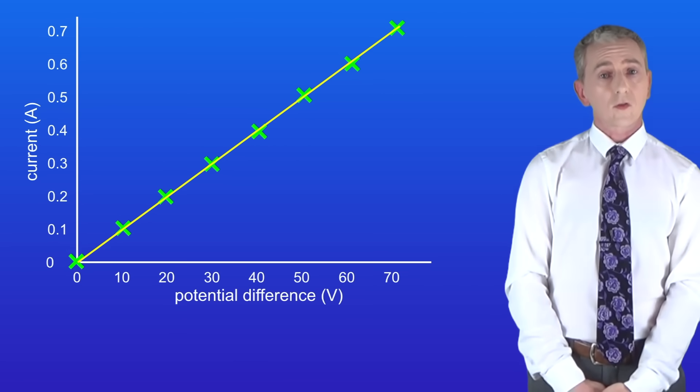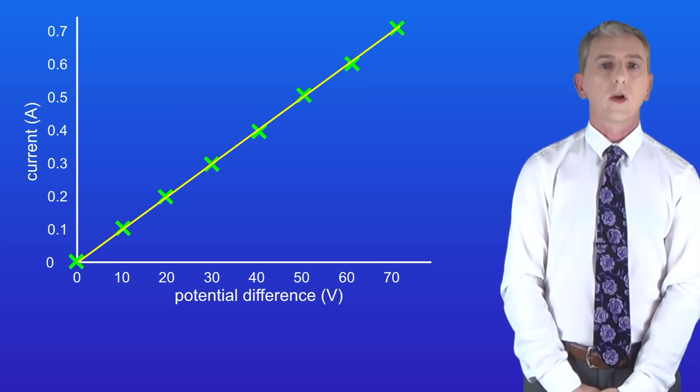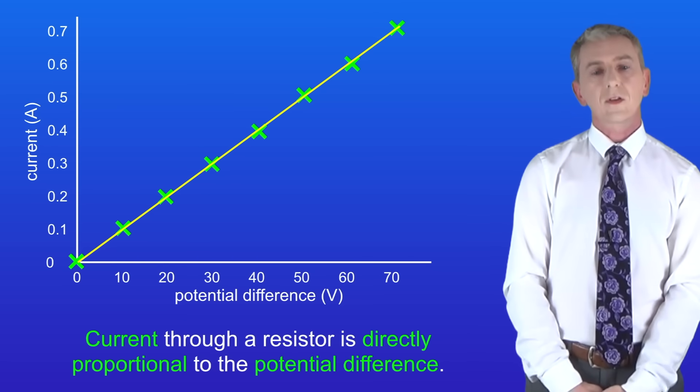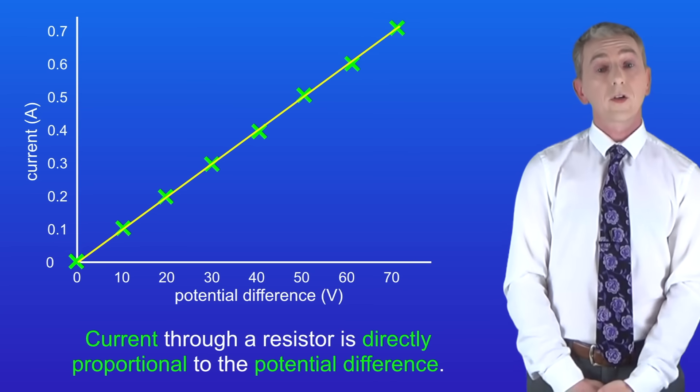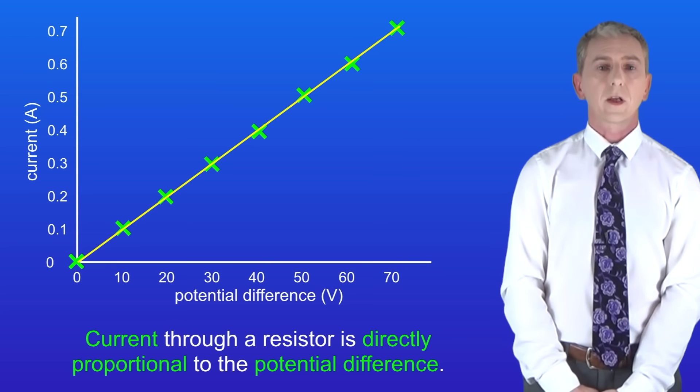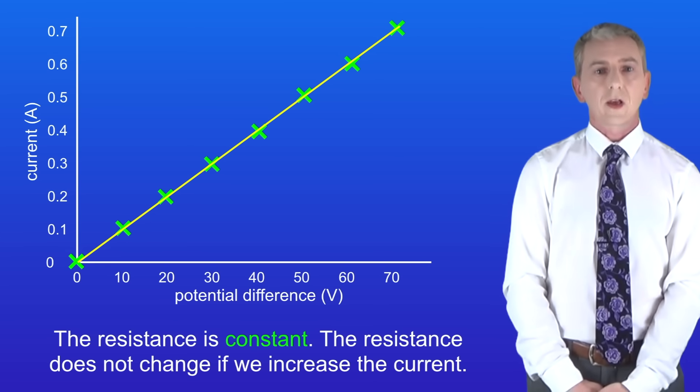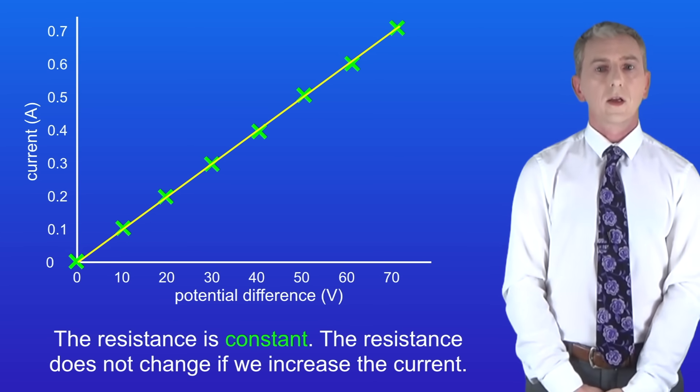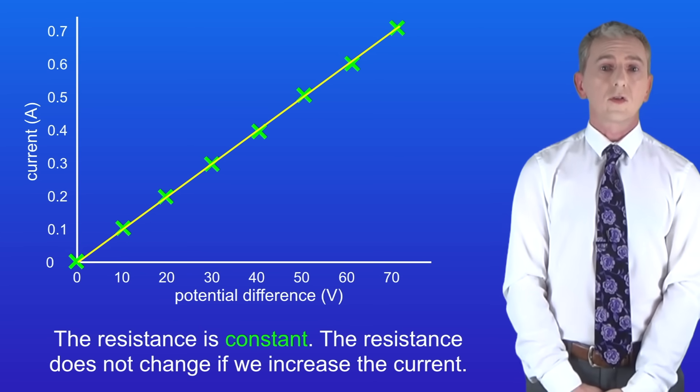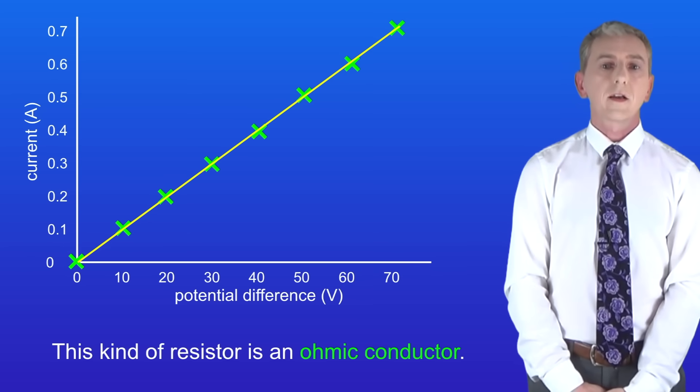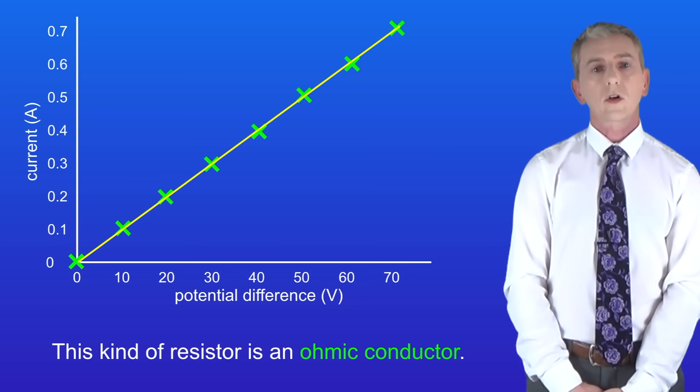As you can see we've got a straight line passing through zero. This tells us that the current moving through the resistor is directly proportional to the potential difference across the resistor. What this means is that the resistance is constant. The resistance does not change if we increase the current. We call this kind of resistor an ohmic conductor.